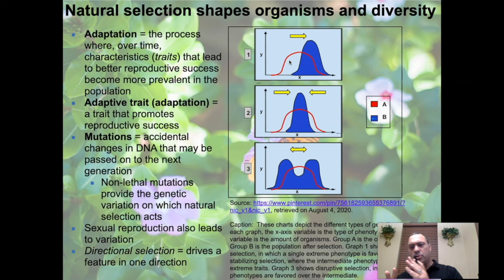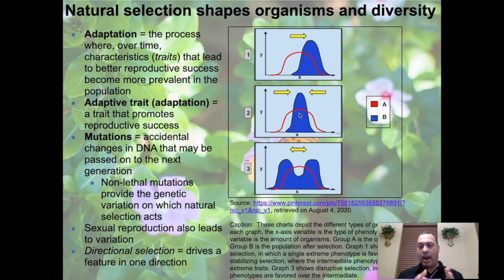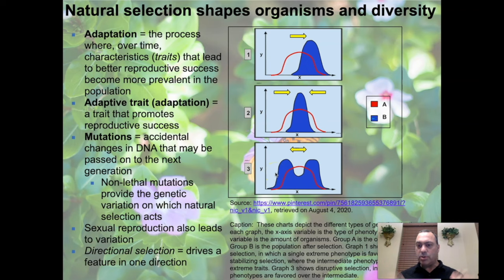On graph two, that same population is being normalized — the central average portion is emphasized while extreme examples are cut out, reinforcing a single phenotype. Alternatively, in disruptive selection, the central phenotype is not preferred — perhaps a disease wipes out the center, but the extremes survive and reproduce, leading to disruptive speciation where one species separates off from another.